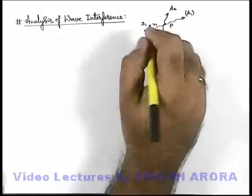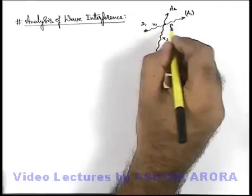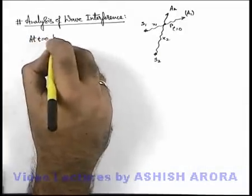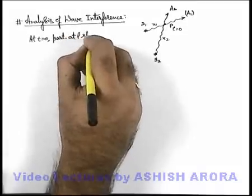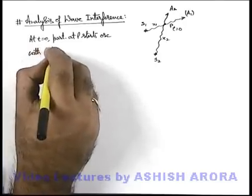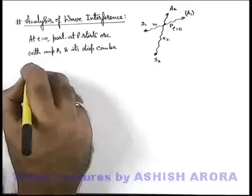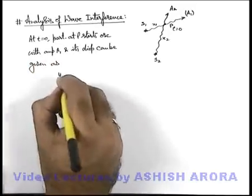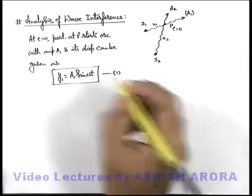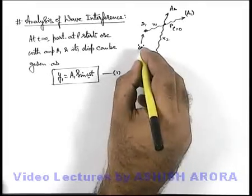In this situation, when the particle at P starts oscillating under the influence of source S1, say that is time t equal to zero. At t equal to zero, the particle at P starts oscillating with amplitude A1, and its displacement can be given as y1 = A1 sin(ωt). We treat ω as the angular frequency of these two sources, and as these are coherent, they must be of the same frequency.